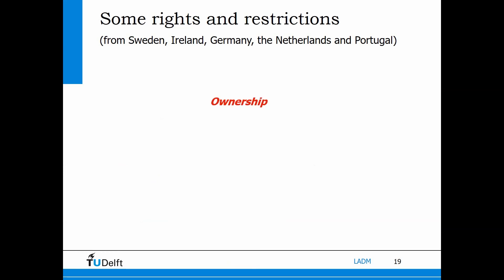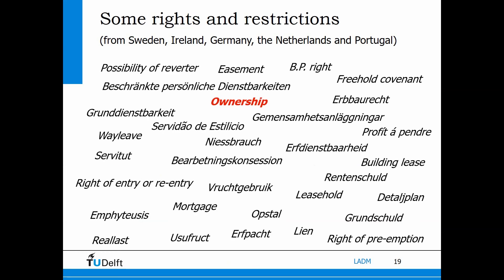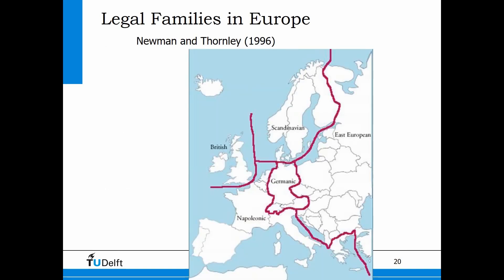Here we see a number of examples of why standardization was supposed to be very difficult. This is from five countries — a list of rights and restrictions with the terms attached — so you see the complexity. The reason, again, is the different legal systems. Here is an overview of the main categories of legal systems in Europe.